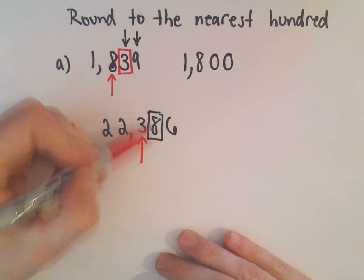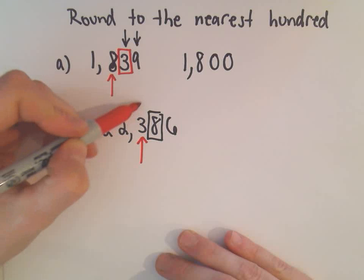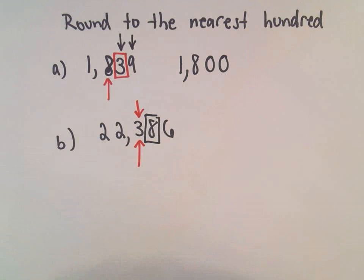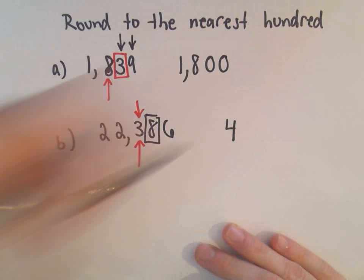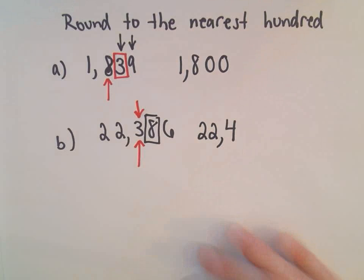So since that is 5 or larger, it says I'm going to increase this number by 1. So my 3 is going to turn into a 4. Again, I leave the numbers prior to that alone.